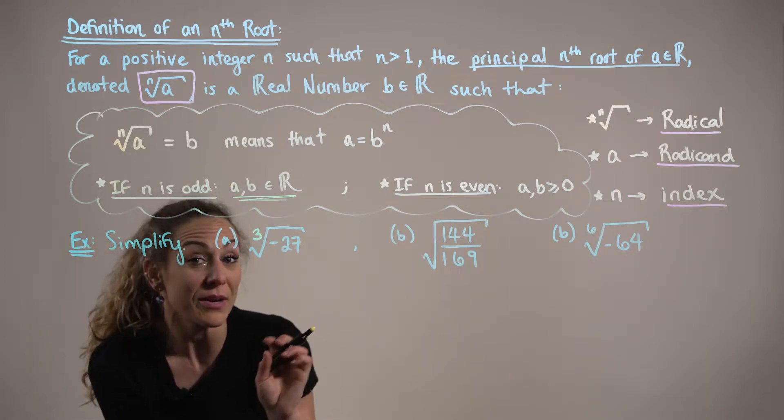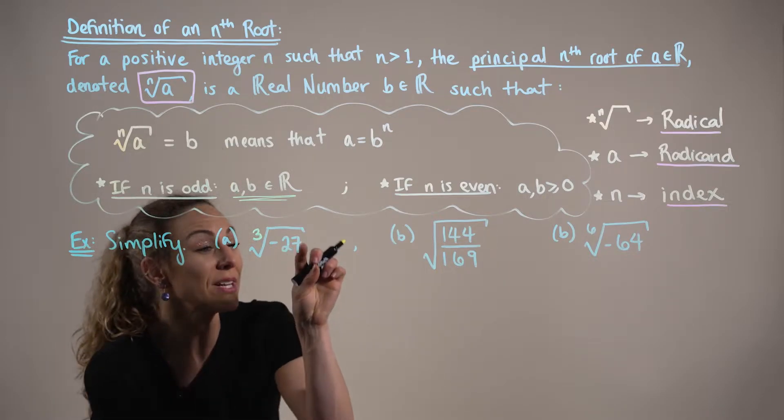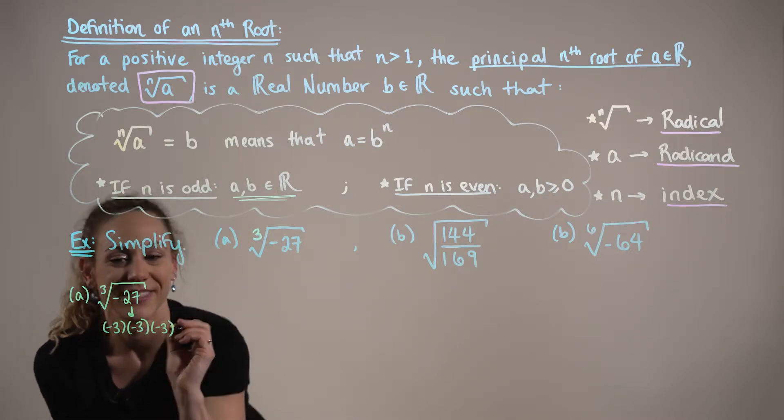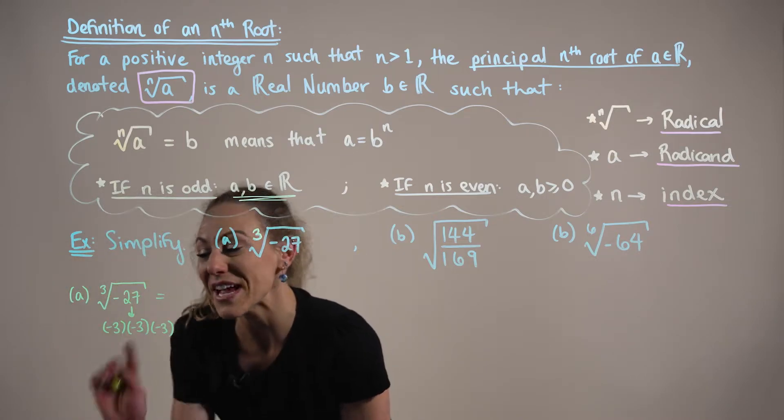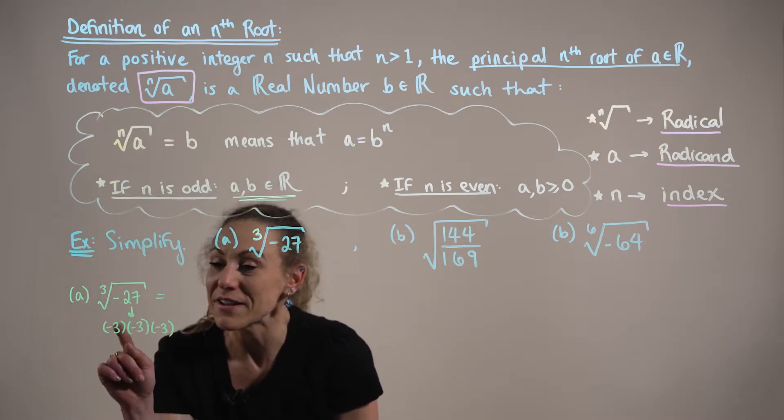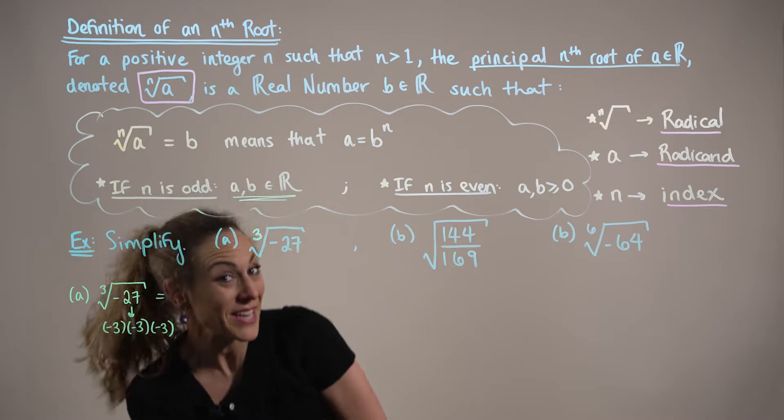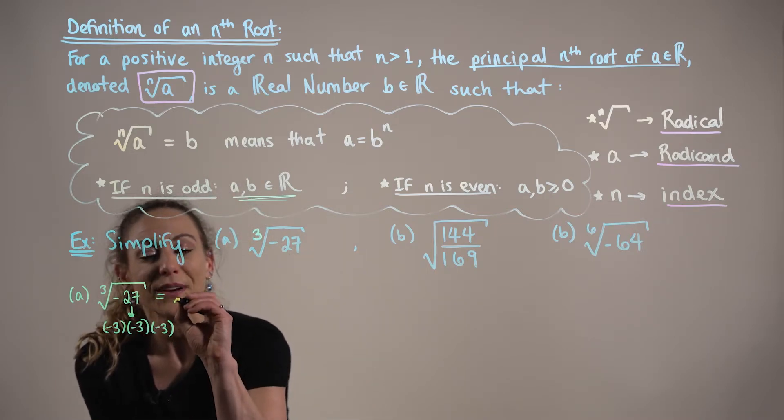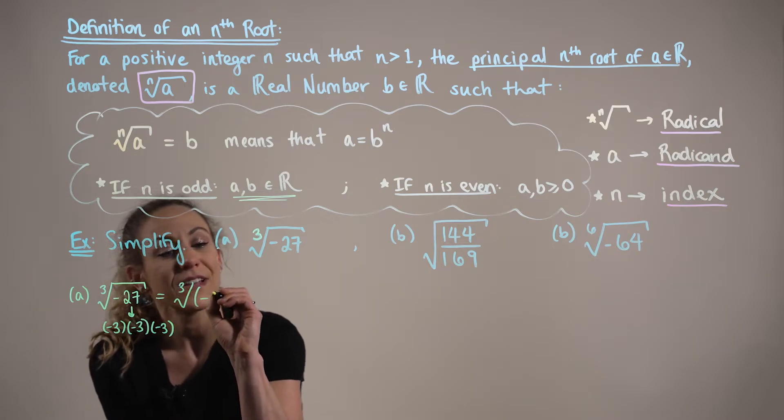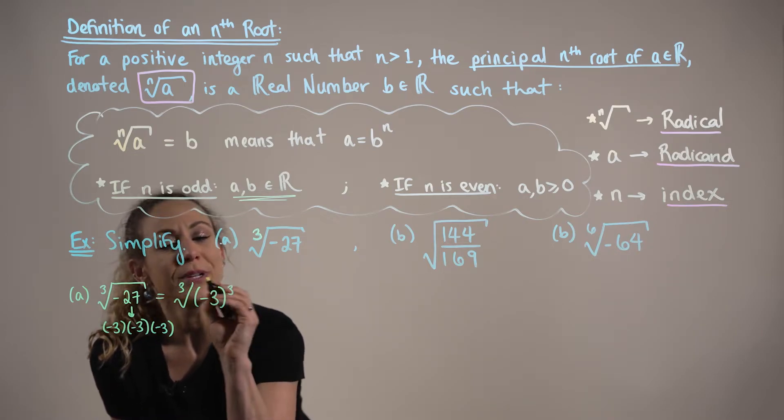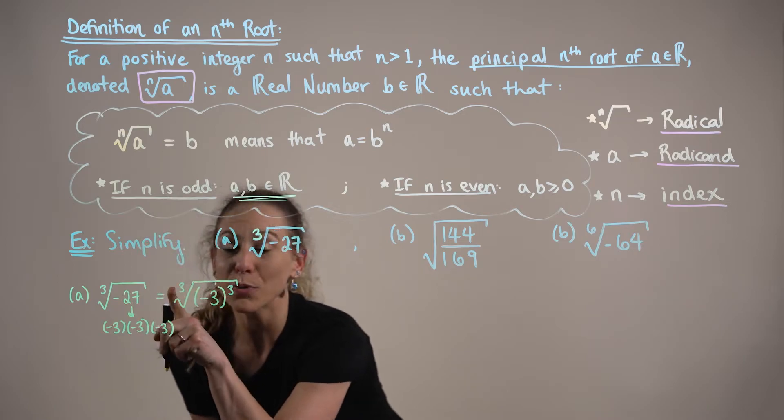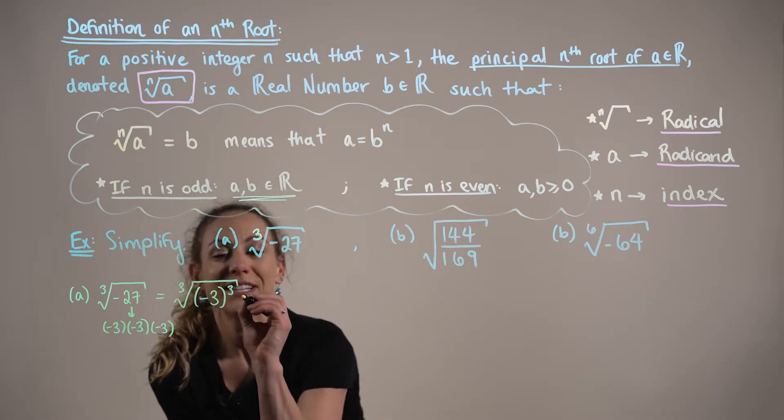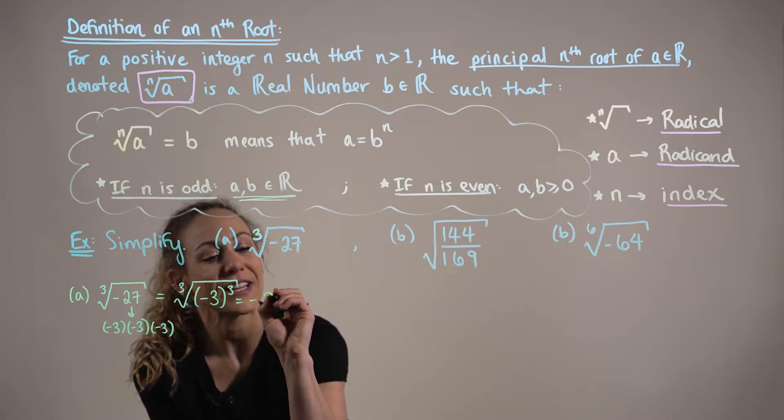So, thinking about the factors of negative 27, we know that negative three times negative three times negative three produces minus 27. So, we can rewrite this as the third root of negative three cubed. And so, the root index and the third power are going to cancel each other out, leaving us with negative three.